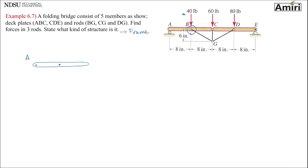There's a pin in the center — B and C. And then another member is CDE. Of course BG, CG, and DG I'm going to skip at this point.